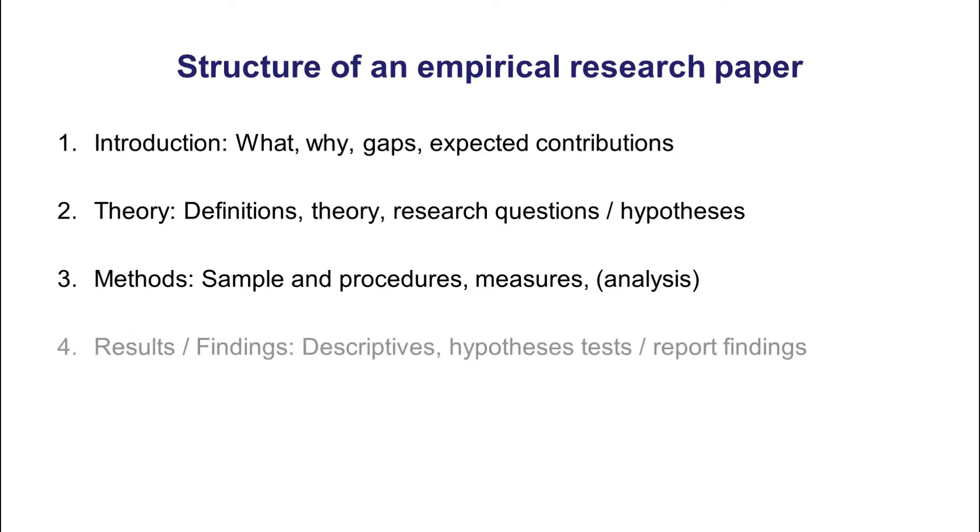Section four is about the results or findings. Quantitative papers usually use the word results. Qualitative papers, very often, they say findings. Essentially, they mean the same. It's about your findings or about your results. In this section, you would typically start with an overview of your data, provide some descriptive statistics. Then, you might test your hypotheses, or if it's a qualitative paper where you have research questions, try to answer your research questions.